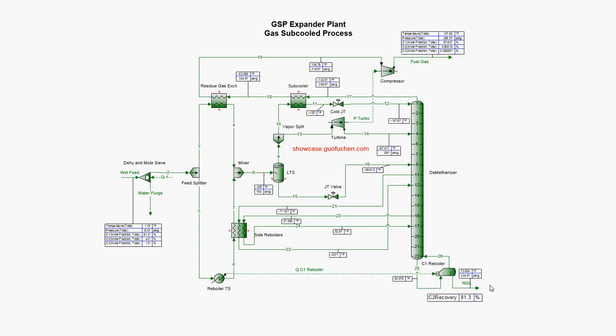As you can see in this example, 81.3% of ethane is recovered in this GSP process. There is no way for a JT plant or mechanical refrigeration unit to achieve such a high ethane recovery.